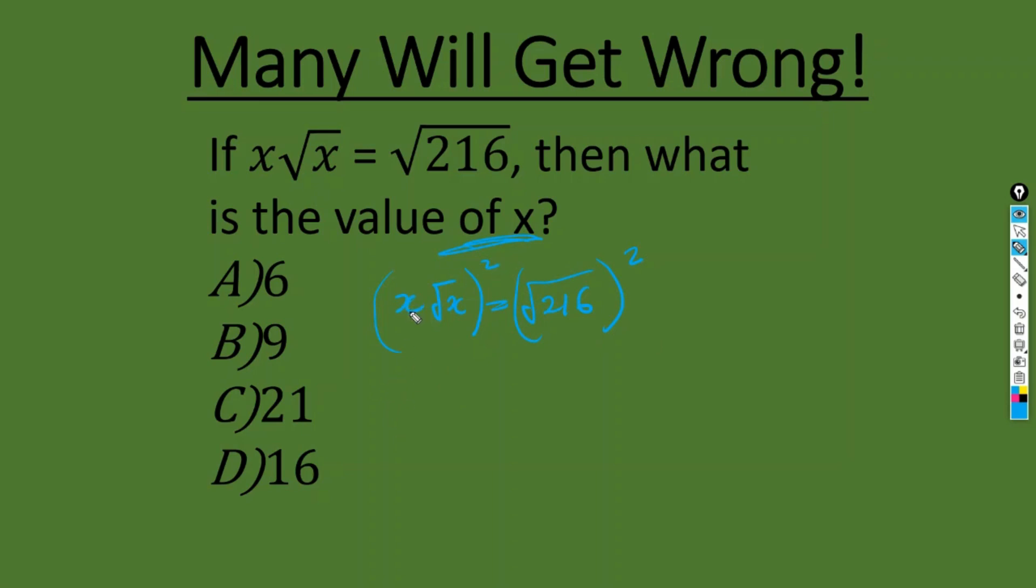So this will be, that's the square of x, which is x squared multiplied by, you know, square root of x times square root of x will give you x. So just knock off the square root. So here we have the square of this will knock off the square root. So we have 216 and this times this is x raised to power 3.